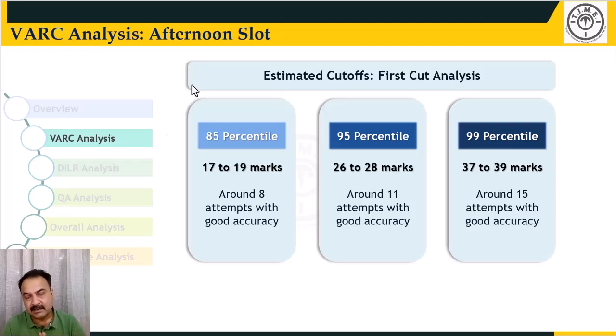As an elementary analysis given our experience with tracking so many CAT papers and from student feedback, we would say that about 85 percentile would mean about 8 odd questions with good accuracy, 11 odd would get you to 95 and about 15 odd questions would get you 99. Not all of them being correct because English is debatable. But this is decidedly a slight shade lower than what it was last year.